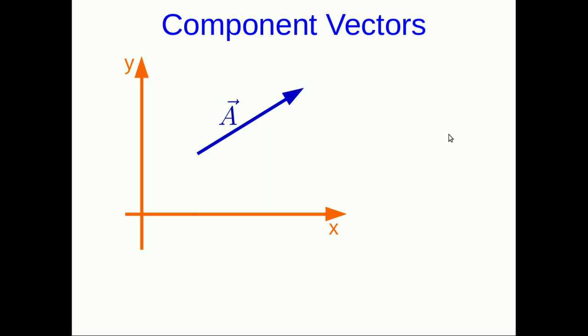Your friend Sam, who we've met before, isn't very good at giving directions and you're trying to teach Sam to give better directions. Sam is standing down here at the tail of this vector and you're going to give Sam directions to get to the head and make them as clear as possible. Sam can't see the vector, but you're standing up on top of a nearby building and you can see this vector just fine.